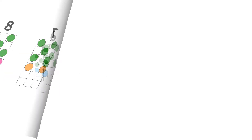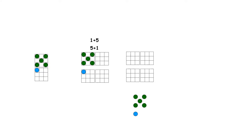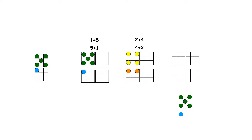Let's look at all the ways we can partition 6 into two numbers. 6 is the same as 5 and 1, and 1 and 5. 6 is the same as 4 and 2, and 2 and 4. 6 is the same as 3 and 3.